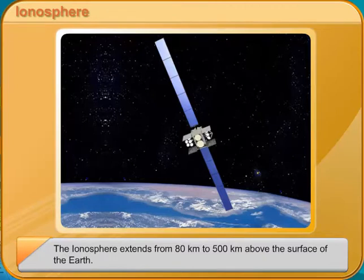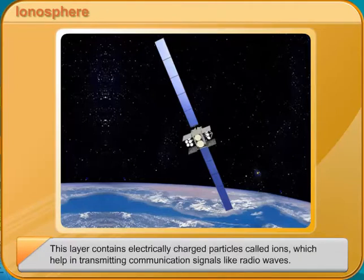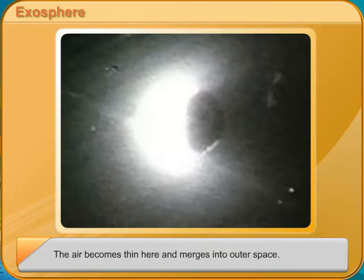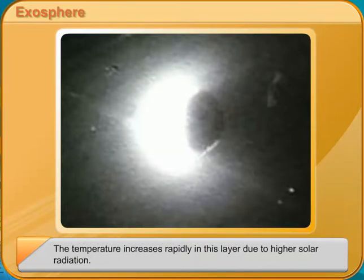The atmosphere is made of various gases that form a protective layer around the Earth, allowing life to exist on the planet. The atmosphere protects the Earth from the harmful ultraviolet rays of the sun. The air currents and winds in the atmosphere regulate temperatures on the Earth. Water vapour in the atmosphere influences the weather and climate of a place.